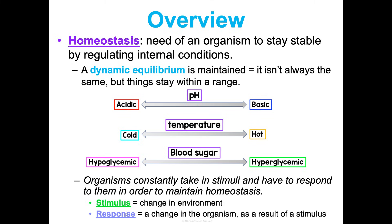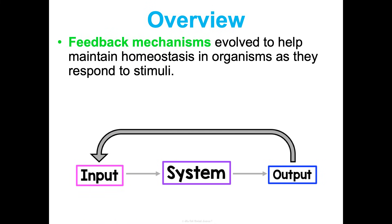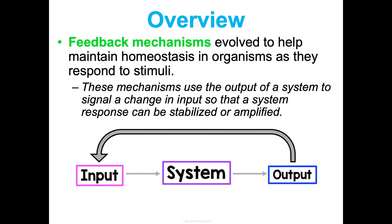Today we're going to talk about how this goes down on a cellular level — not just an organism shivering in order to warm up, but what's going on cellularly to make that happen. There are feedback mechanisms within your cells that have evolved to help maintain homeostasis as organisms respond to stimuli. These mechanisms use the output of a system to signal a change in the input so that the response is either stabilized or amplified.